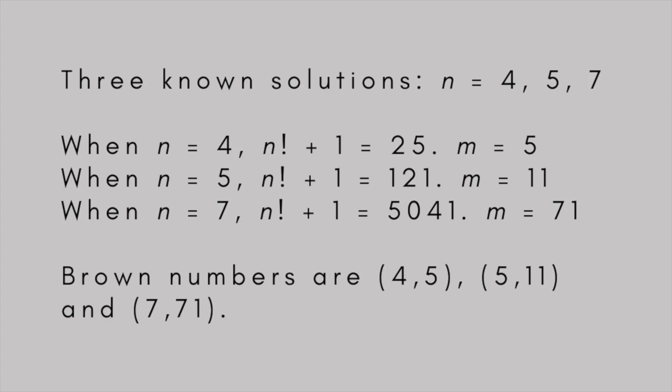When n equals 5, n factorial plus 1 is 121, which is 11 squared. And when n equals 7, n factorial plus 1 is 5041, which is 71 squared.